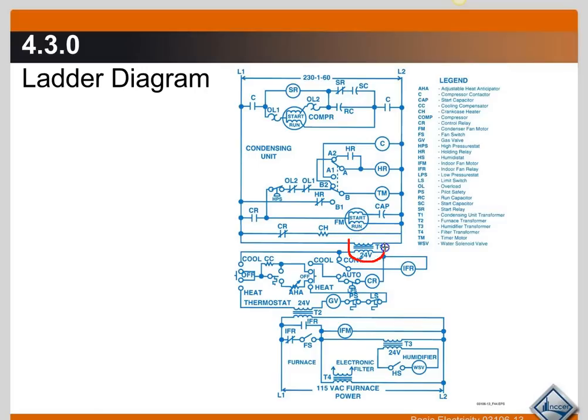Then we have our transformer dividing the high voltage side which is here from the low voltage side. And then you have your low voltage rung of the ladder there.